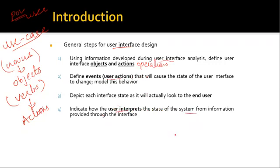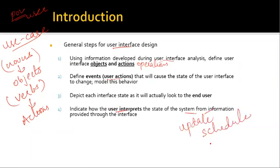For example, if you get a dialog box that says you need a system update, it will ask whether you want to schedule it or update and restart the system at that particular time. You need to identify how the user is going to understand this and whether you're going to simplify it.